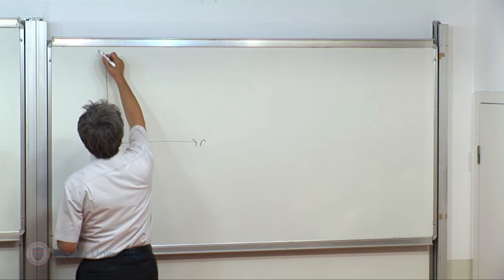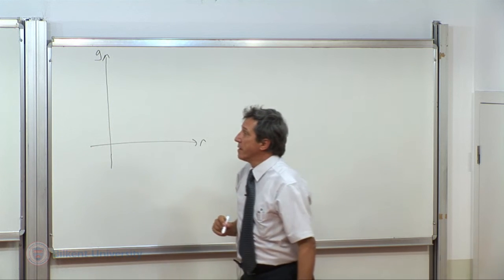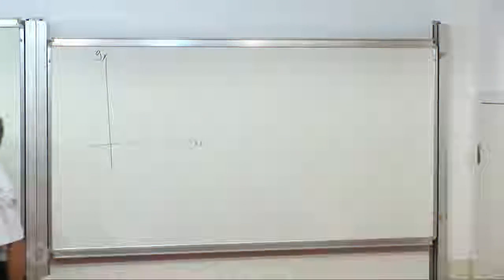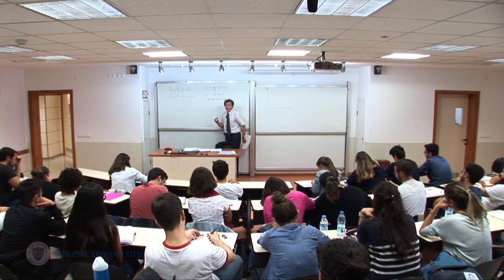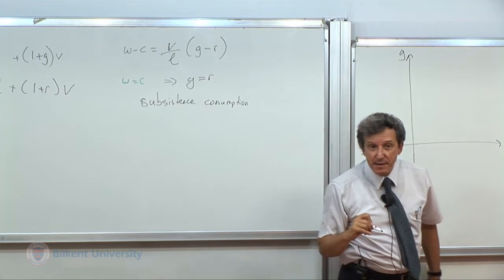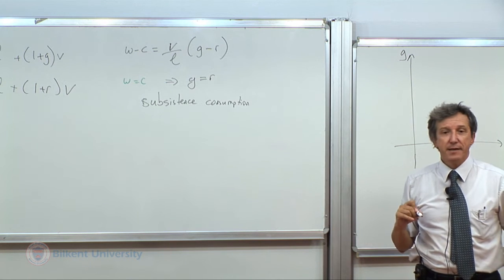There is no unemployment and all labor force has to meet the demand for labor. Therefore wages are driven to minimum consumption basket. And this leaves us with two equations of this sort. On this axis we have R and over here we have G. If W is equal to C, then it means that the growth rate of investment is equal to the net profit rate in this economy.